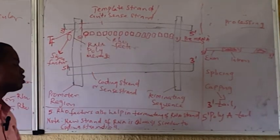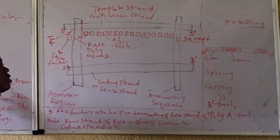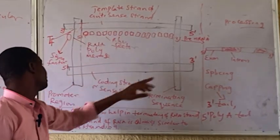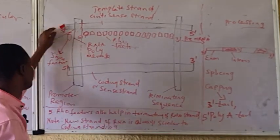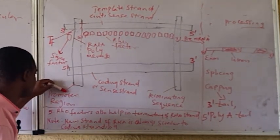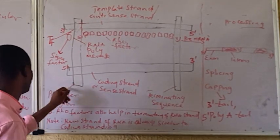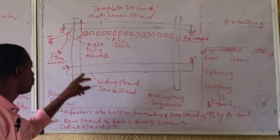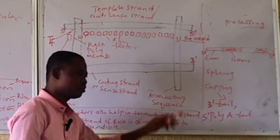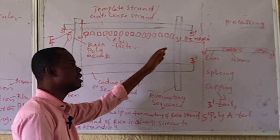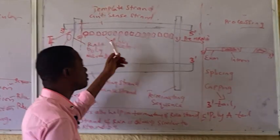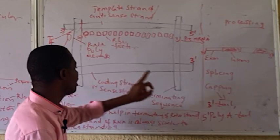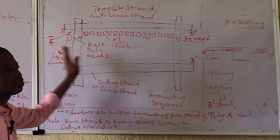Before we look at each of these stages, we have a DNA strand here, oriented 3' to 5' and 5' to 3'. On the DNA strand, we have the promoter region, which is where the process of initiation starts — where the new RNA strand will be initiated. We also have the terminating sequence, which is where the new RNA strand will be terminated.